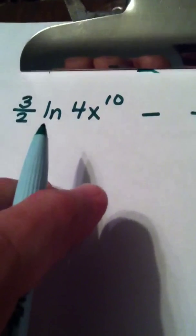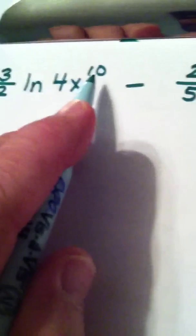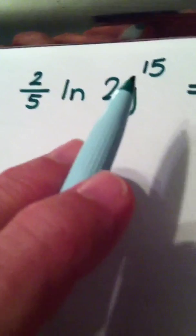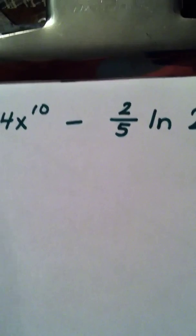Ok ladies and gentlemen, this next problem is not so pretty, but we're going to work through it. 3 halves times the natural log of 4x to the 10th minus 2 fifths times the natural log of 2y to the 15th. And we're trying to pull it all together, write it as a single log.